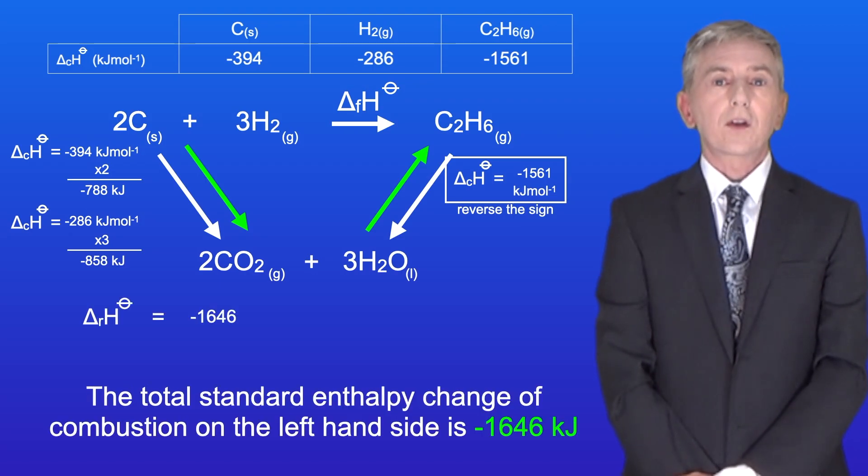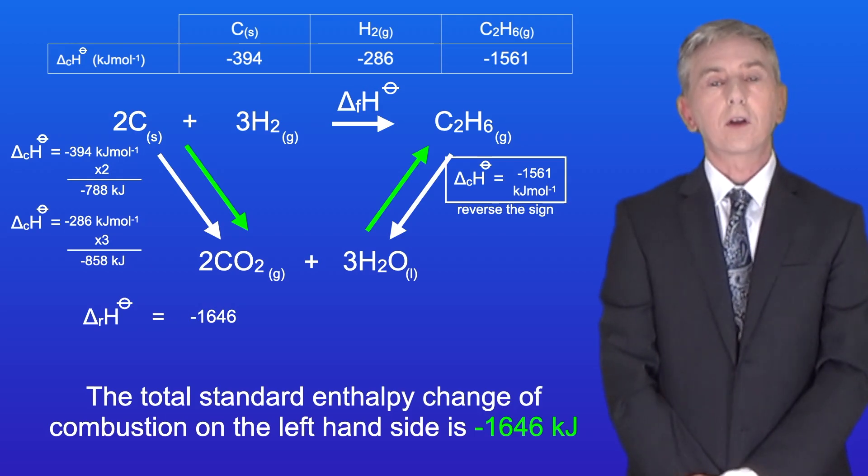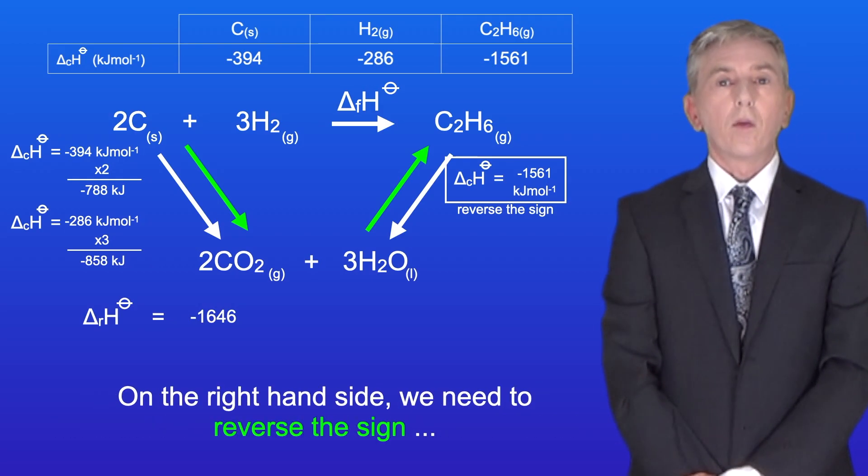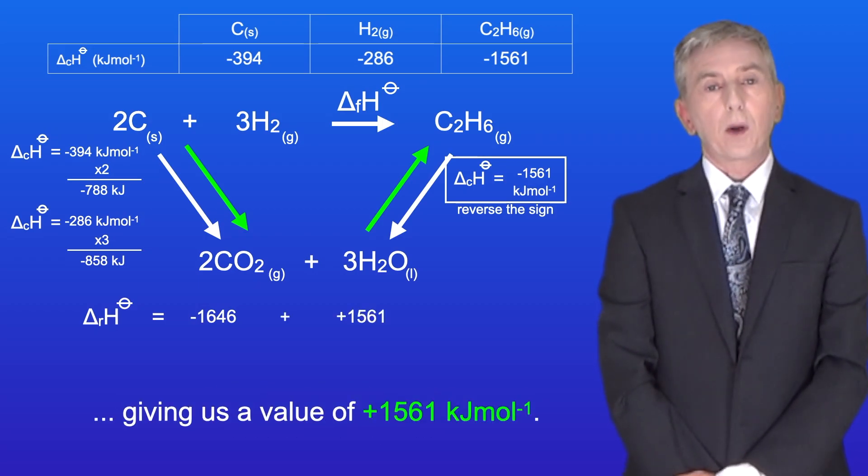The total standard enthalpy change of combustion on the left-hand side is -1646 kJ. On the right-hand side, we need to reverse the sign, giving us a value of +1561 kJ/mol.